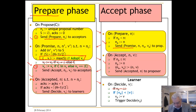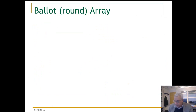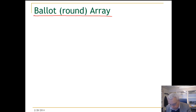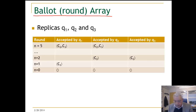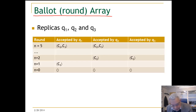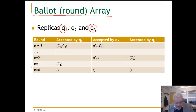To really understand this algorithm, we would like to look at the notion of a ballot array, which represents the state of the acceptors. Looking at this picture, you will see that we have three replicas, Q1 to Q3, and every round of accepted proposals are in one row.